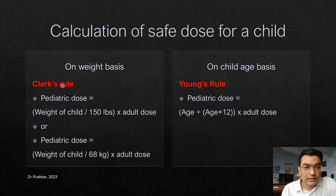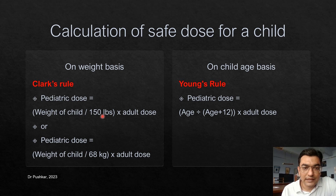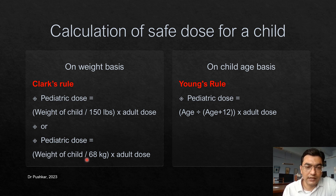Clark's Rule is weight-based, while Young's Rule is age-based. Clark's Rule formula: Child's dose equals weight of child divided by 150 pounds, multiplied by adult dose. If you have the child's weight in kilograms, use the converted formula: Pediatric dose equals weight of the child in kg divided by 68 kg, multiplied by adult dose.